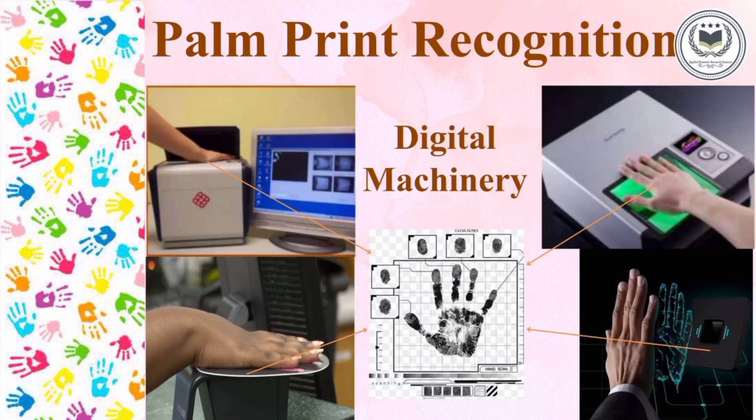Here is some digital machinery used to recognize palm prints. In earlier times, the full hand was inked and a trace was taken on paper. After everything turned digital, digital machineries were made. In the first picture, you can see a large machine connected to a computer, where the database is saved directly. In the second picture, there is a biometric system also connected to a computer. In the next picture, a biometric system on which the hand is kept scans it and saves the database internally.